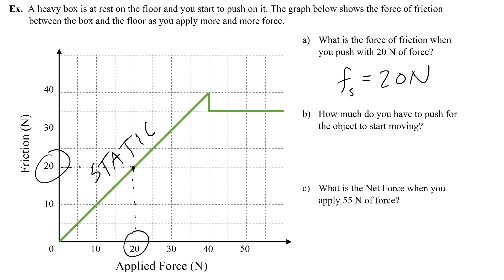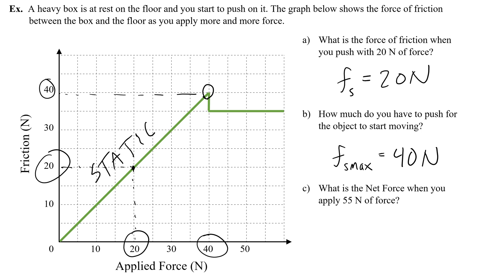Part B asks: how much do you have to push for the object to start moving? This is asking us to find Fs max — the maximum force of static friction. Looking at the graph, it appears that 40 newtons is how much you have to push; that's the maximum amount of static friction, and that's how hard you have to push to just get the object to start moving.